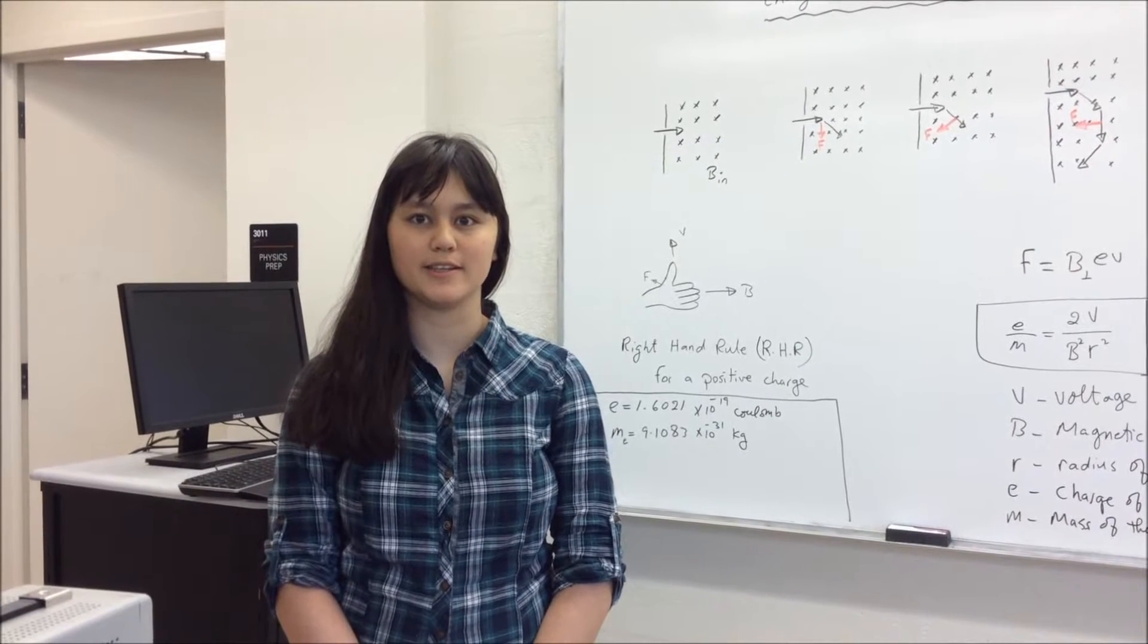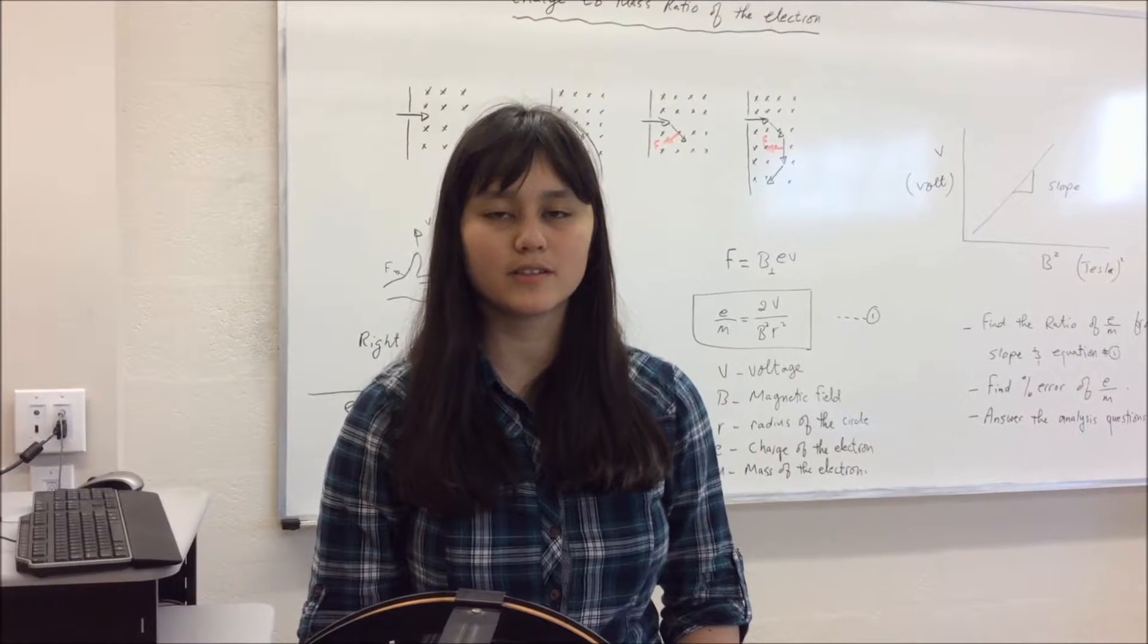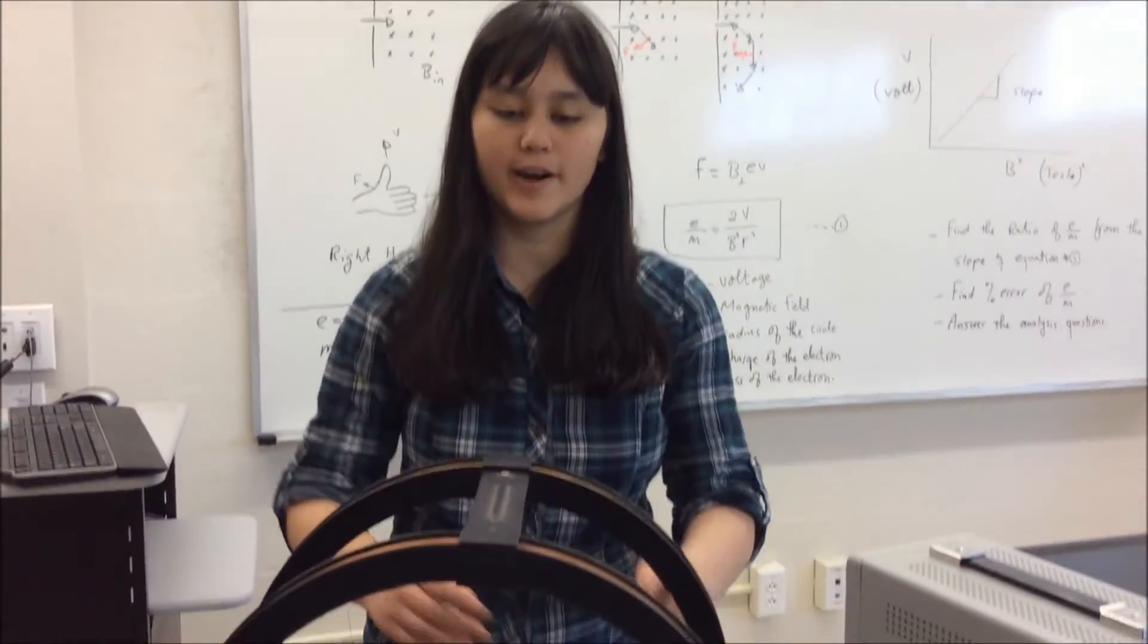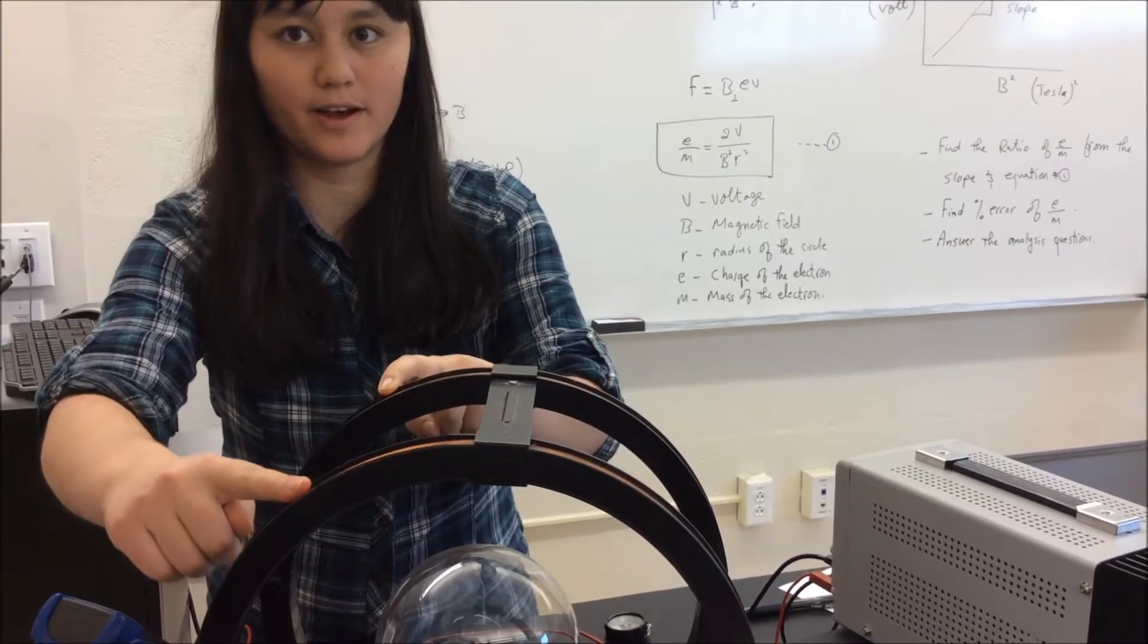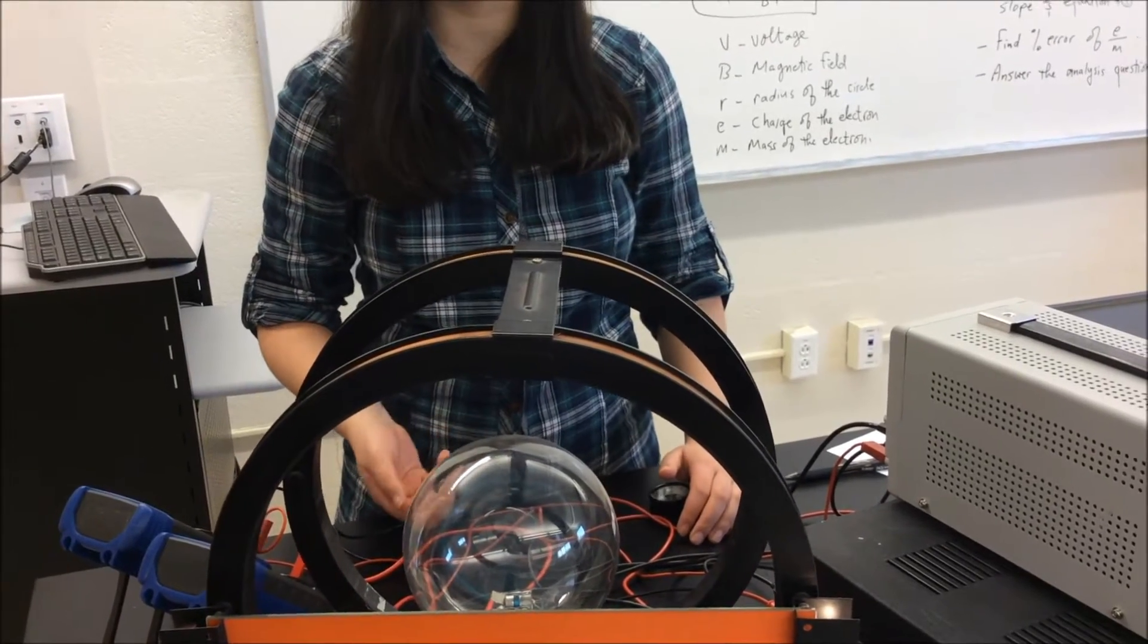The purpose of the lab today is to find the charge-to-mass ratio of an electron. The setup we have here is called Helmholtz coils, and in this setup the radius of one coil is equal to the distance between the two coils. This is done so that the magnetic field everywhere in between the two coils is going to be uniform.